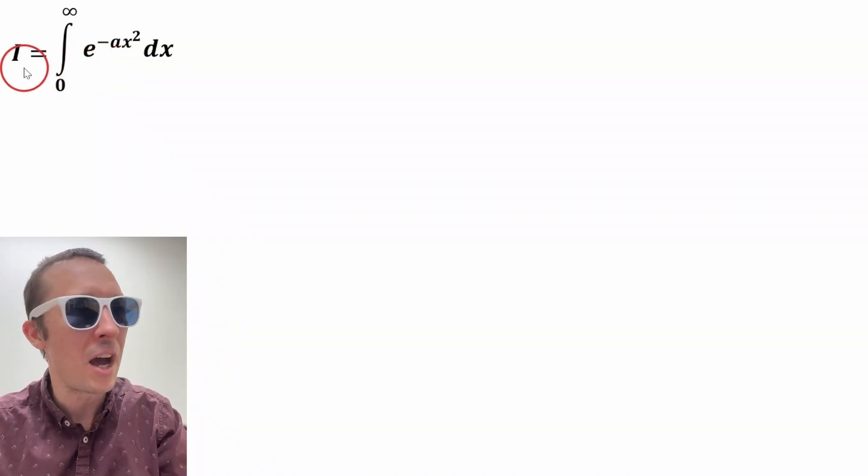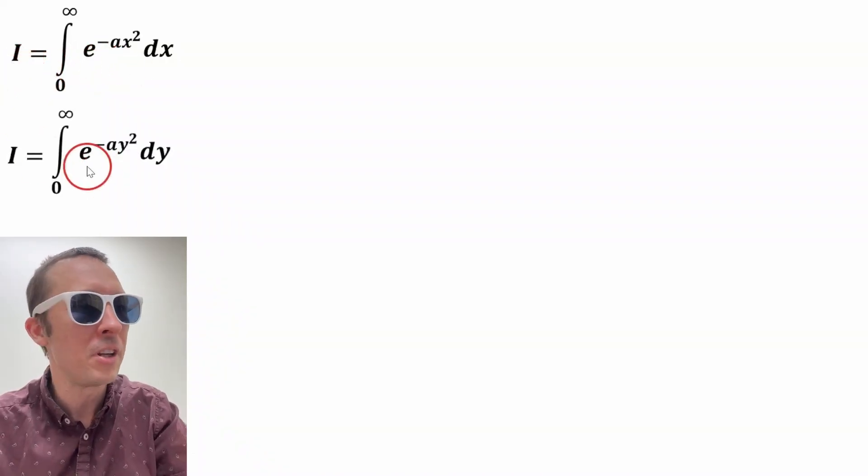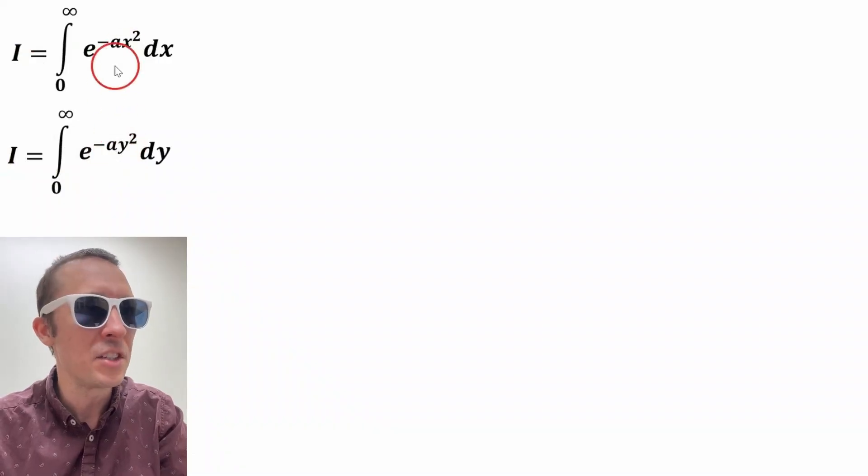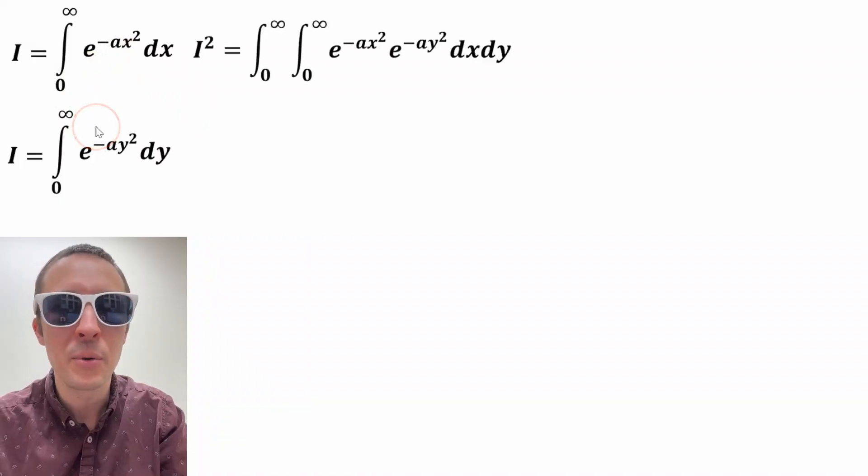So we'll set the integral equal to I, and then we'll rewrite this integral in terms of y instead of x. That doesn't change anything. It's just changing the variable. Now we'll multiply these two equations together.